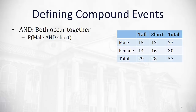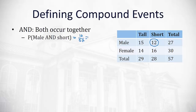A special compound event is the AND, where we want both events to occur together. An example would be looking for a male AND a short person — where they both overlap. There are only 12 out of 57 people that are both male and short. Calculating 12 out of 57 and rounding to four digits gives 0.2105.